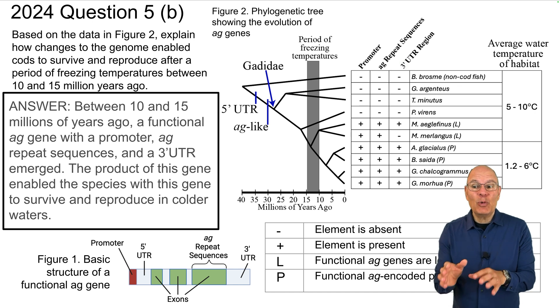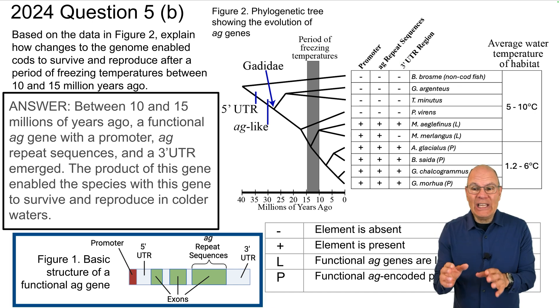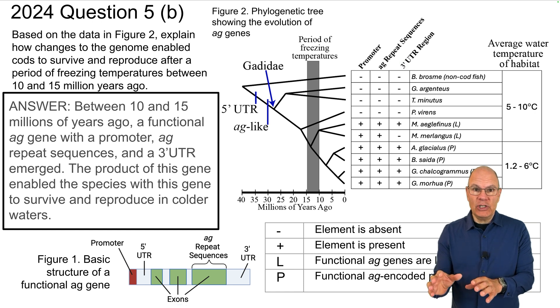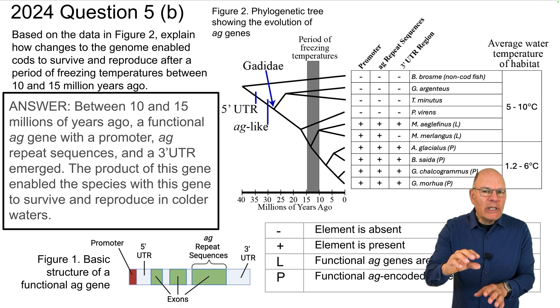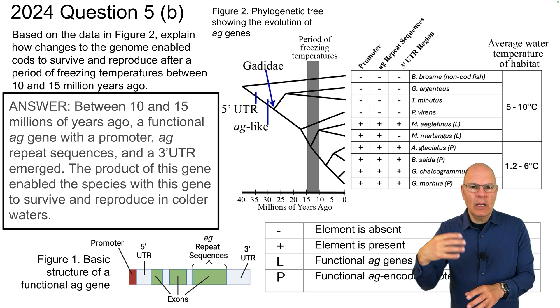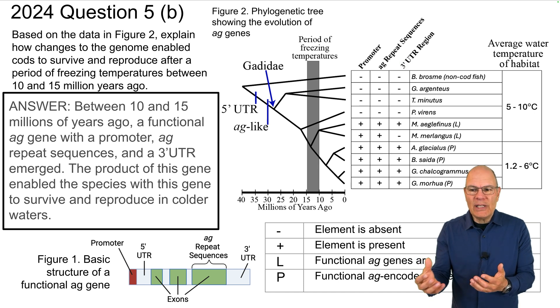The answer is that between 10 and 15 millions of years ago, a functional AG gene with a promoter, AG repeat sequences, and a three prime UTR emerged. The product of this gene, in other words, the proteins that the gene codes for enabled this species with this gene to survive and reproduce in colder waters.